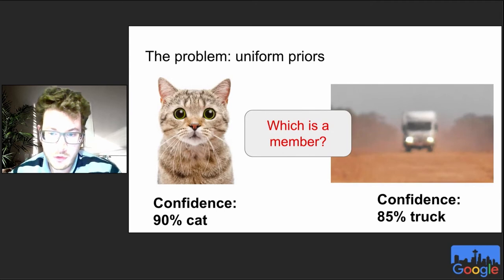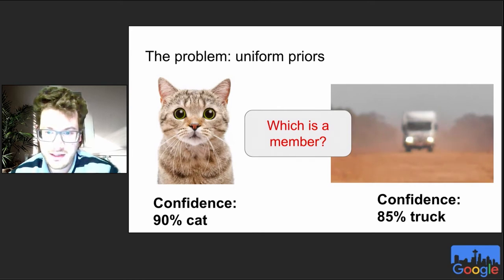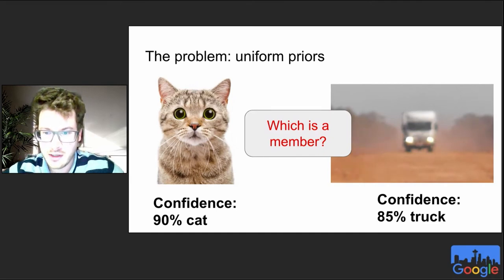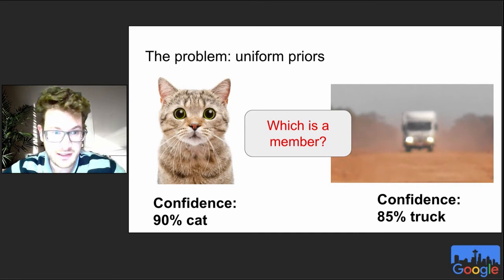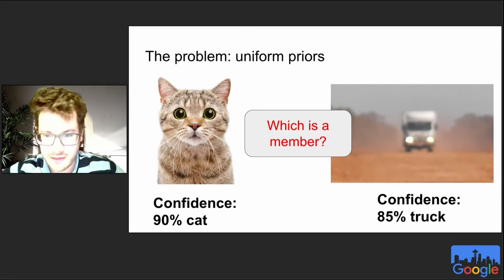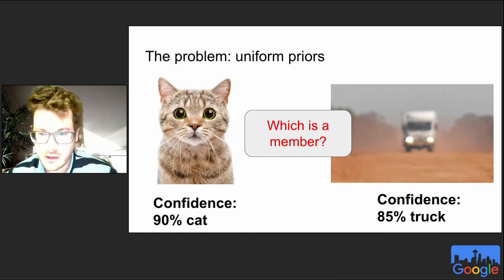The core reason existing attacks don't work is that they implicitly assume a uniform prior on how hard individual examples are. Consider two images: a clean cat and a very noisy truck. Existing attacks would say the cat is more likely to be a training member because the model's confidence is higher. But this is wrong — any reasonable model will have high confidence on a canonical cat image, whereas the weird-looking truck with high model confidence is actually more surprising and thus more informative for membership inference.